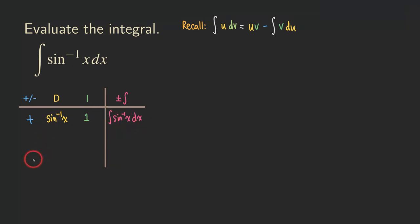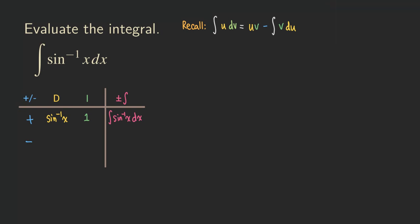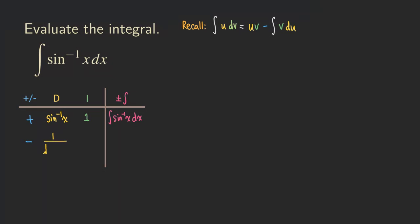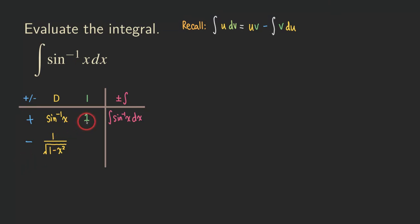We are going to start moving down the columns now. For this column we have a minus sign, and then the D column is taking the derivative of that. It's going to be one over the square root of one minus X squared. That's the derivative of the arc sine function. Now next, we integrate the DX or the one, so we are getting just X right here.